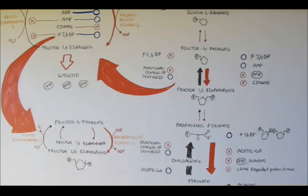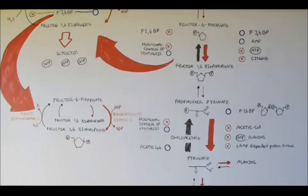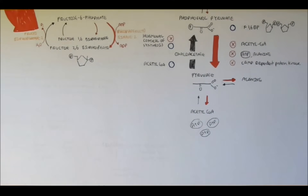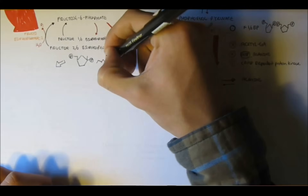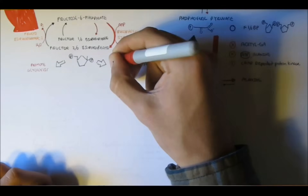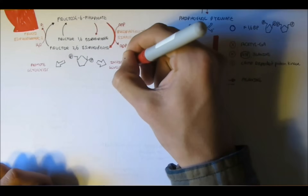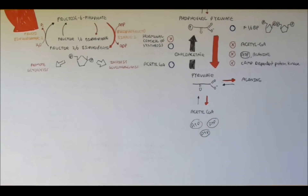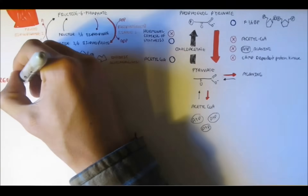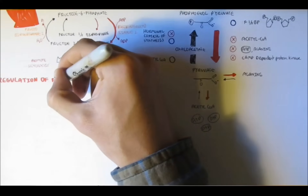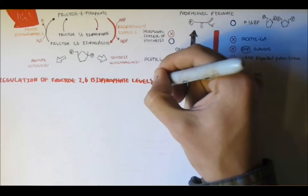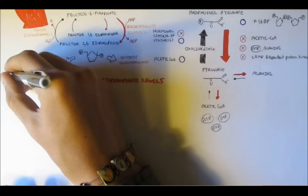You might have noticed that between fructose 6-phosphate and fructose 1,6-bisphosphate, and between fructose 6-phosphate and fructose 2,6-bisphosphate, the names of the enzymes are the same — just one has number 1 and the other has number 2. Keep that in mind. Fructose 2,6-bisphosphate is a product, not an enzyme, and it essentially promotes glycolysis and inhibits gluconeogenesis. There are also other forces controlling the regulation of fructose 2,6-bisphosphate itself.